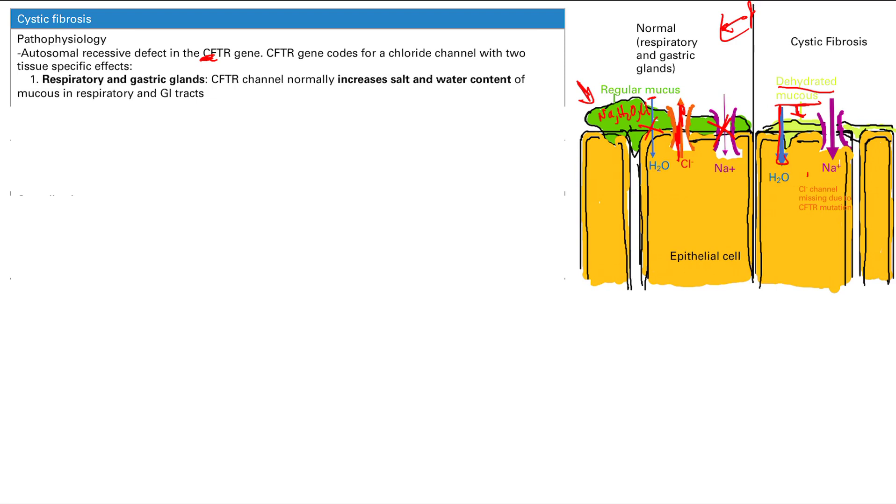We're going to talk about these problems later, but it's due to this dehydrated mucus that's going to cause obstruction. There's super thick dry mucus that's going to cause obstruction in the glands, in the respiratory tract and the lung, in the GI tracts. Next, I told you there's two tissue specific effects. This is the first one. Second one is in the sweat glands.